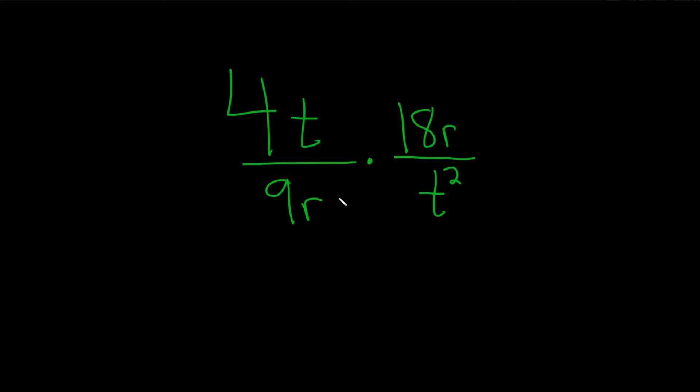So we need to think about what we can cancel. The 4 and the 9 don't reduce, and these don't reduce. But look, here we have an R, and here we have an R. So we can just do this, and they go away, because they cancel.